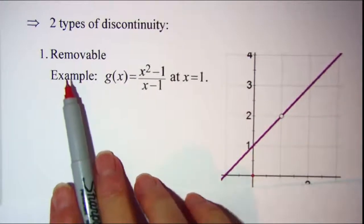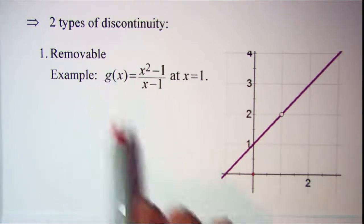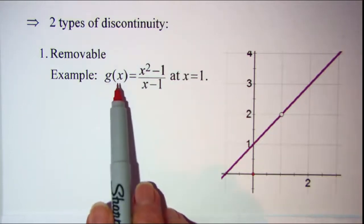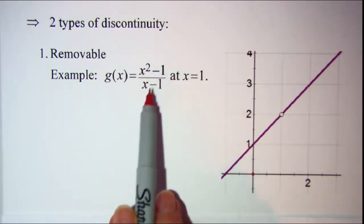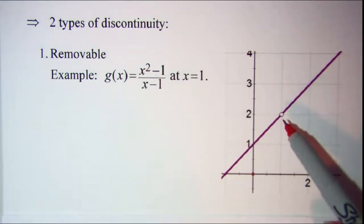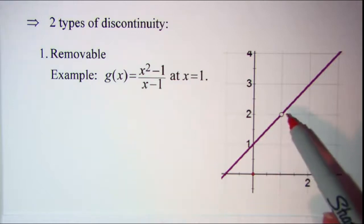The first type that we will look at is the removable discontinuity. The example here is the function g of x which is equal to x squared minus 1 divided by x minus 1. And you see from the graph that when x is equal to 1 there is a hole in the graph.